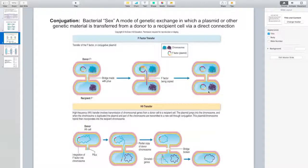The recipient has now become F-positive as well because a copy of the genome was given from the donor to the recipient through the conjugation tube. That is the transfer of F-factor.